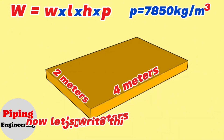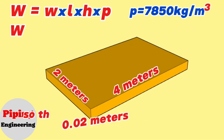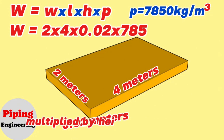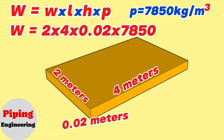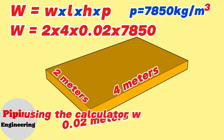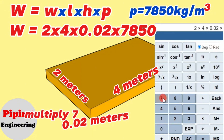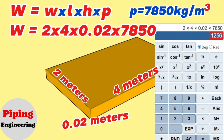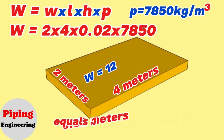Now let's write this information into the weight calculation formula. The weight equals width 2 meters multiplied by length 4 meters, multiplied by height 0.02 meters, and multiplied by the iron density of 7,850 kg per cubic meter. Using the calculator, we find that 2 × 4 × 0.02 × 7,850 equals 1,256. So we calculated and found that the weight of the iron sheet in our example equals 1,256 kg.